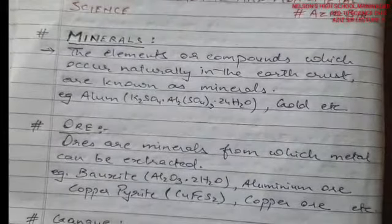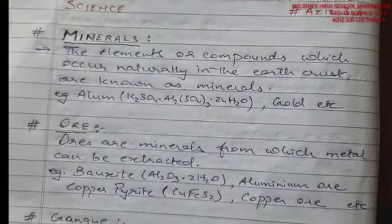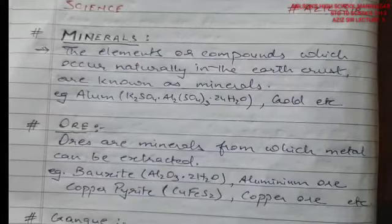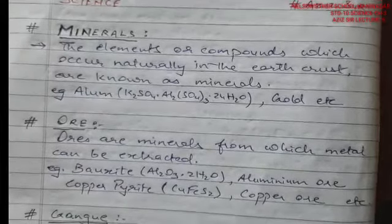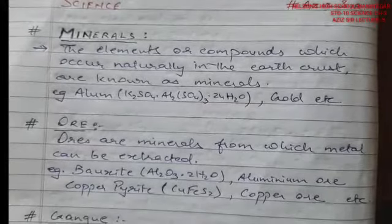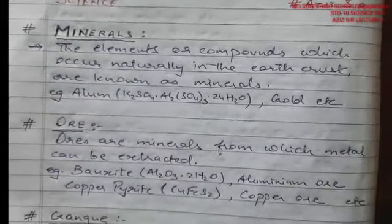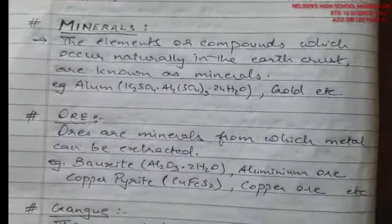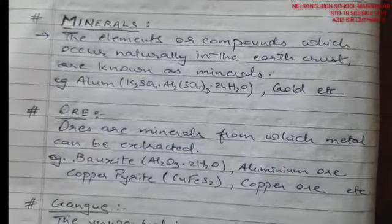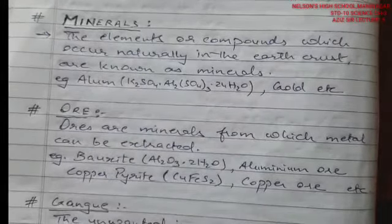First we are going to learn about minerals — what are called as minerals. The elements or compounds which occur naturally in the earth's crust are known as minerals. For example, alum, whose formula is K₂SO₄·Al₂(SO₄)₃·24H₂O, is found in nature. In the same way, gold is totally found in free state. They are all called as minerals obtained from the earth's crust.